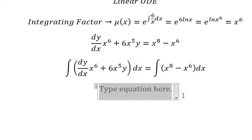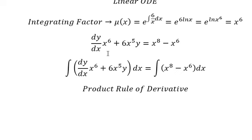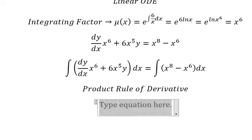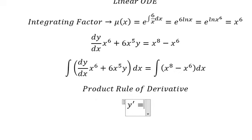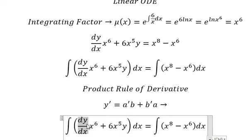So in this one we can use the product rule of derivative. We have first derivative of Y equals first derivative of a multiplied by b plus first derivative of b multiplied by a. So for this one we have first derivative of a multiplied by b.